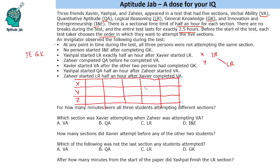Zaheer completed QA before he completed VA — that is one piece of information about Zaheer. Xavier started VA after the other two persons had completed GK. So both Y and Z should complete GK; then only Xavier can start VA. Until both of them have completed GK, he cannot start VA.